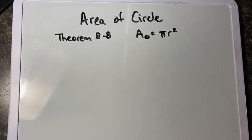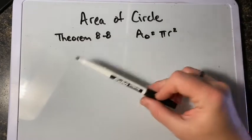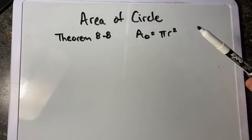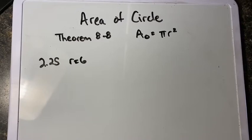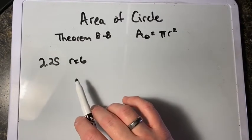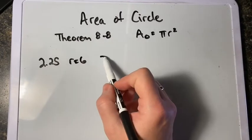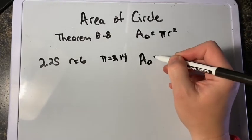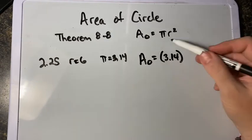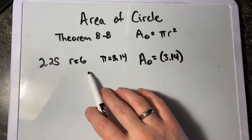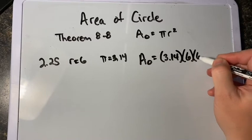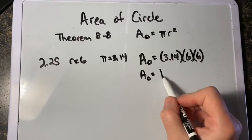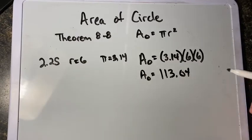That's enough about circumference. Now let's talk about the area of a circle. Theorem 8.8 on page 31 states that the area of a circle equals πr². For problem 225, find the area using π as 3.14 with a radius of 6. The area equals 3.14 times 6 squared — remember, that's 6 times 6, not 6 times 2. Plugging this into the calculator gives us an area of 113.04 square units.